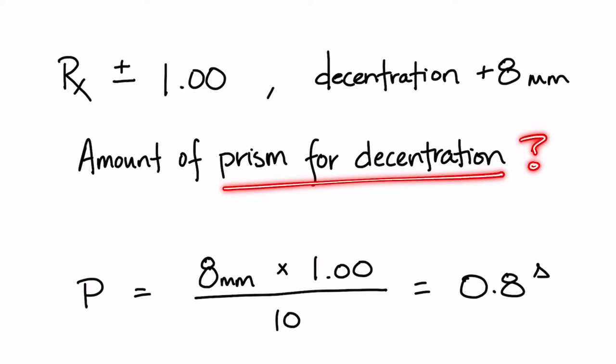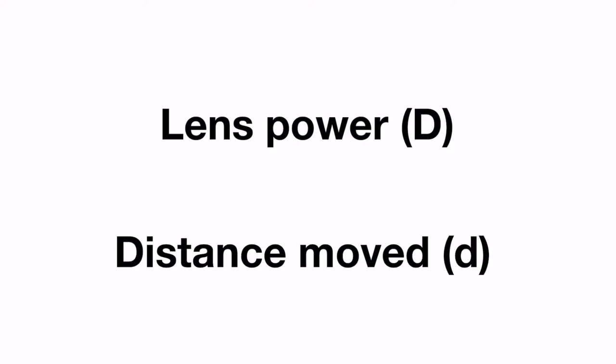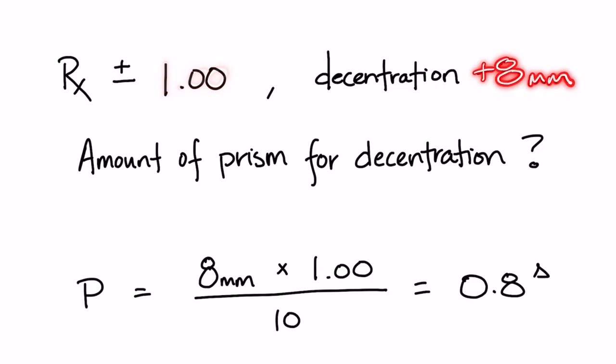Let's take a look at a one diopter spherical lens power that needs eight millimeters of decentration on the blank. The plus in front of the eight lets us know that the eight millimeters of decentration will be in towards the nose.